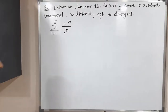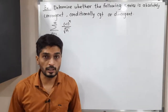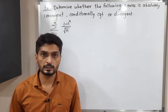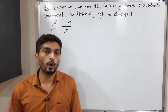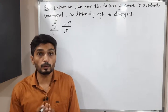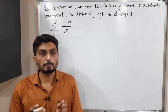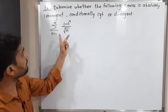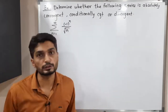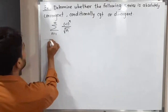Let us discuss this example. We have a series and we have to check whether it is absolutely convergent, conditionally convergent, or divergent. First of all, we will check if it is absolutely convergent or not — that means we apply modulus to it and check whether it is convergent.